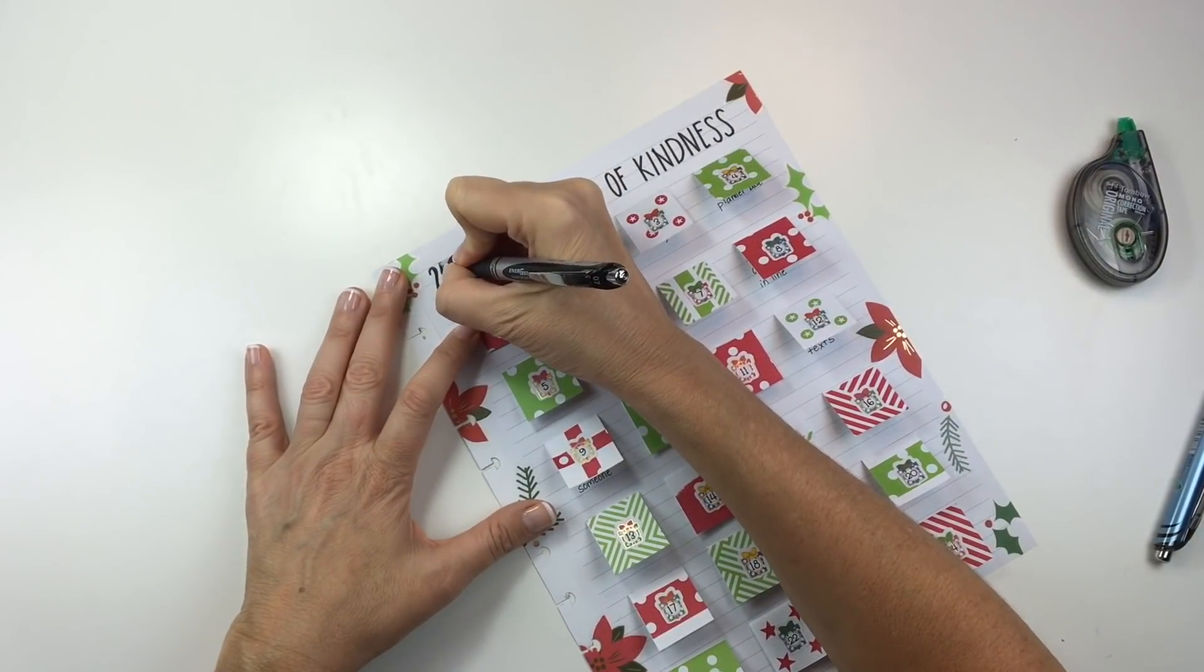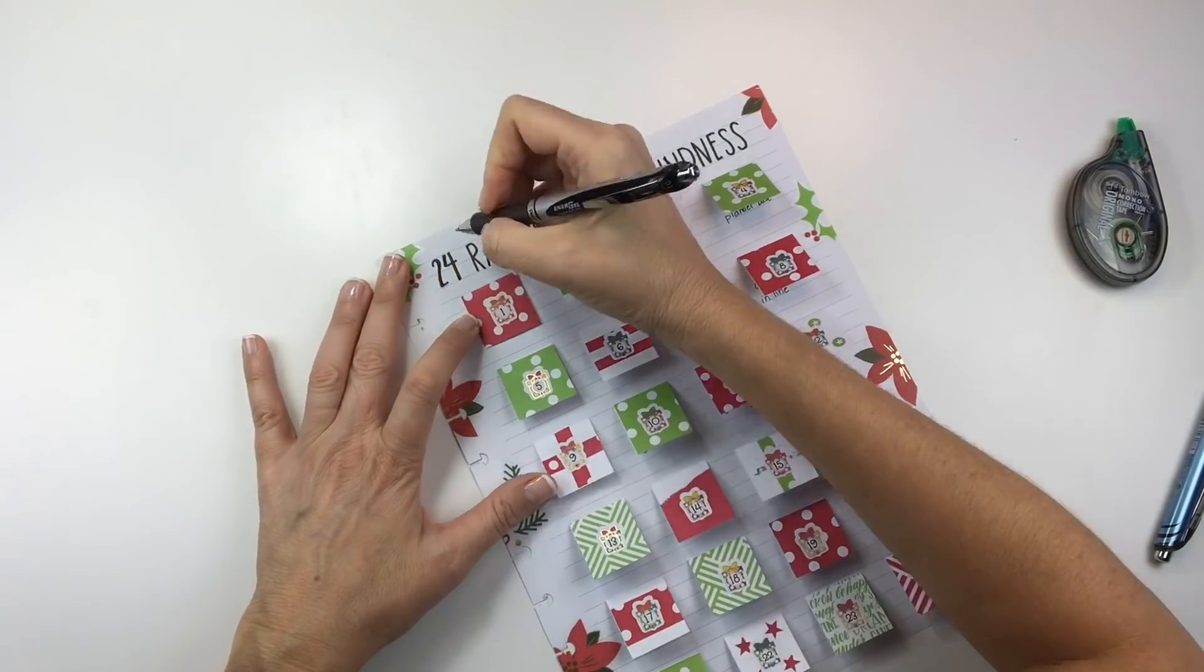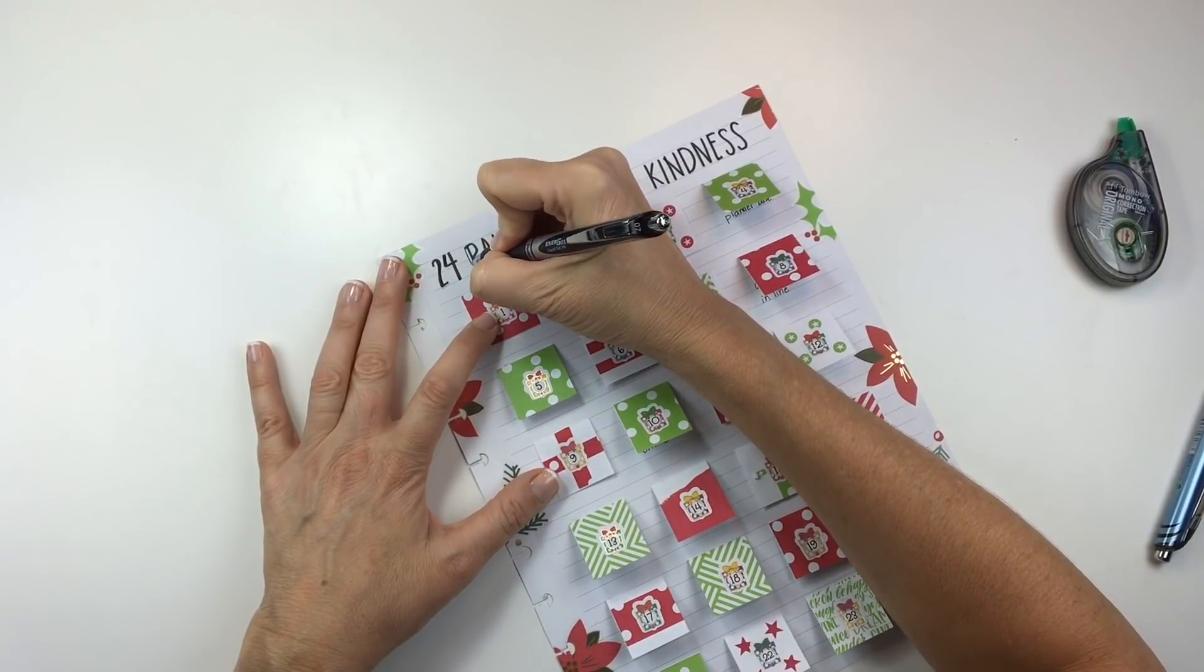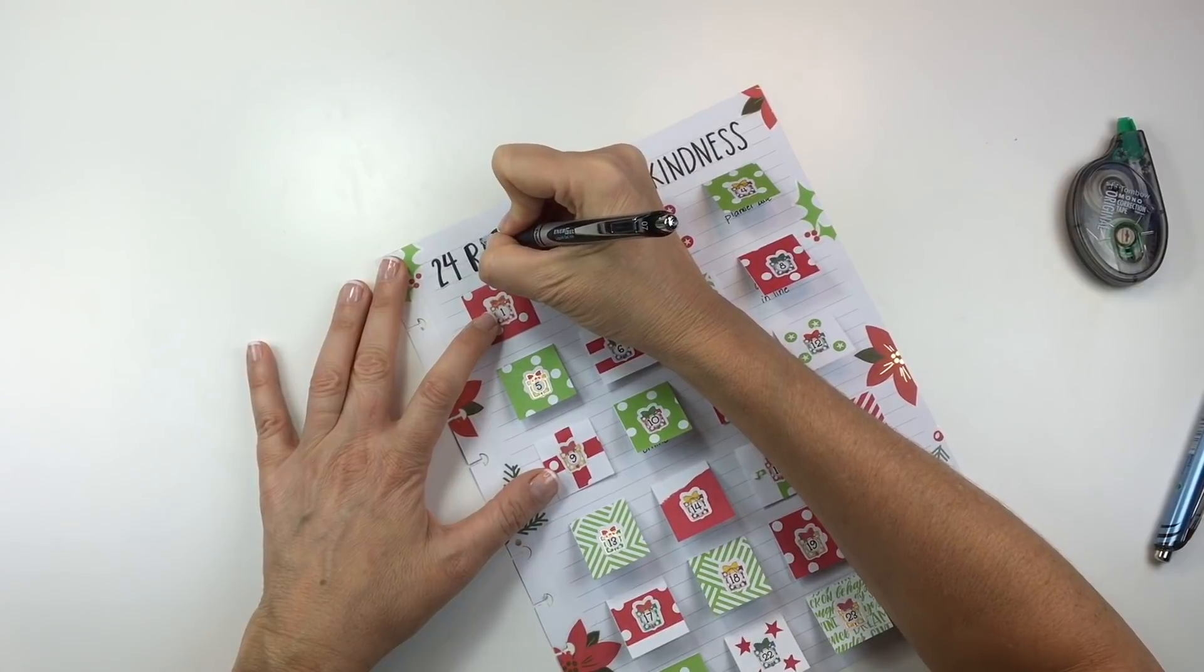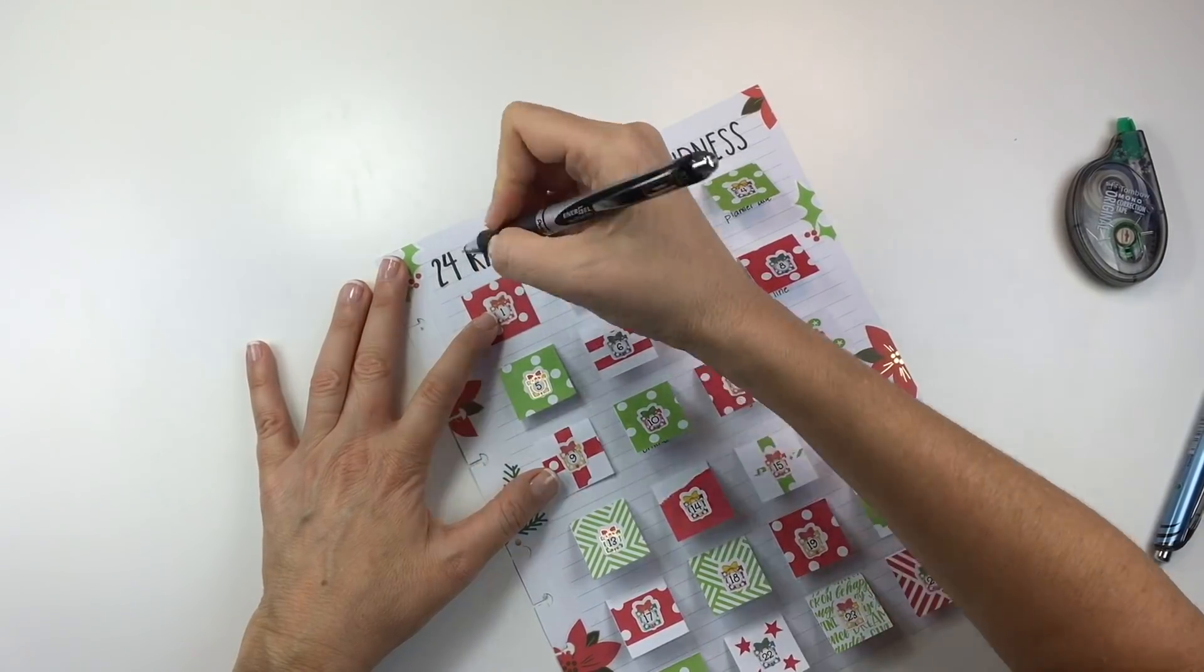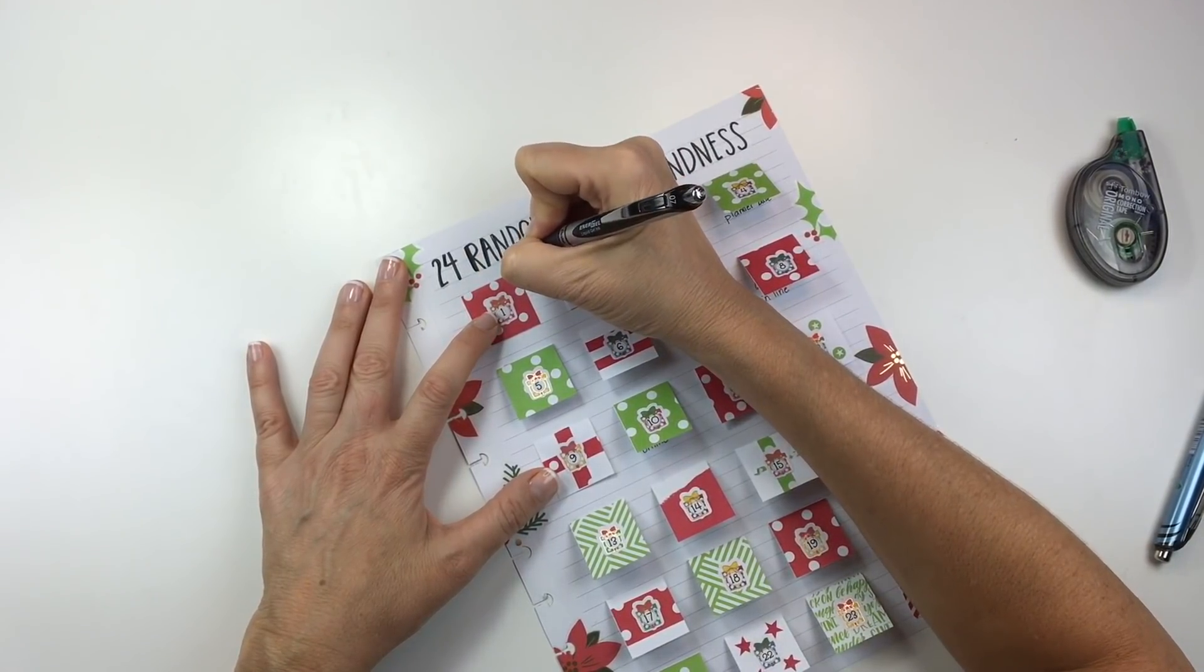Now I'm just going to go back in and color in the downstrokes on the letters at the top of the page just to make it a little more interesting. And then I'm finished and I hope you guys are encouraged to do your own random acts of kindness.